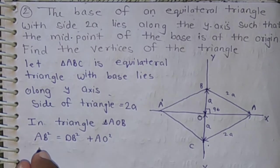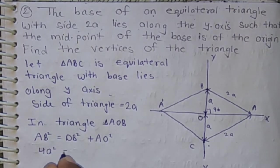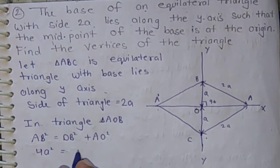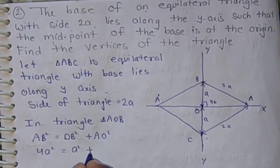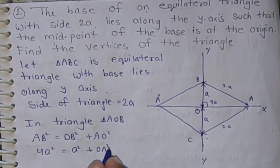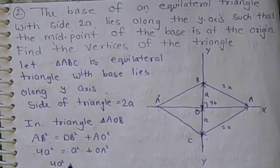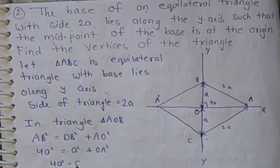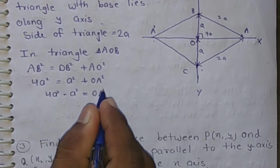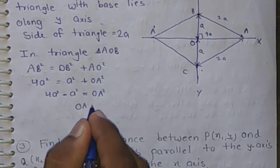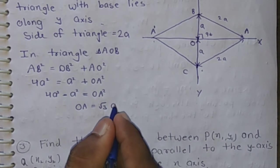AB square means 4a square. OB square is a square and AO is unknown. Then we have 4a square minus a square equals AO square. Then value of AO is root 3a.